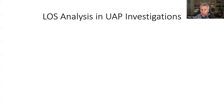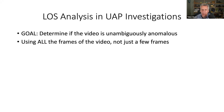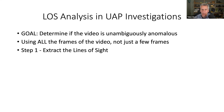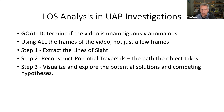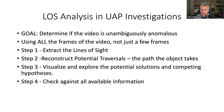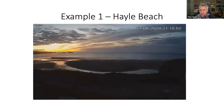What do we do with line of sight in UAP investigations? Our goal is to find if something is unambiguously anomalous — something we can't identify by conventional means. Using all frames of the video, the process is: step one, extract the line of sight; step two, reconstruct the potential traversals; step three, visualize and explore potential solutions and competing hypotheses; step four, check against all available information; step five, don't eliminate anything — just move it down the list.